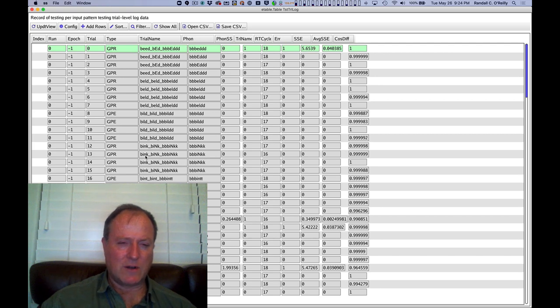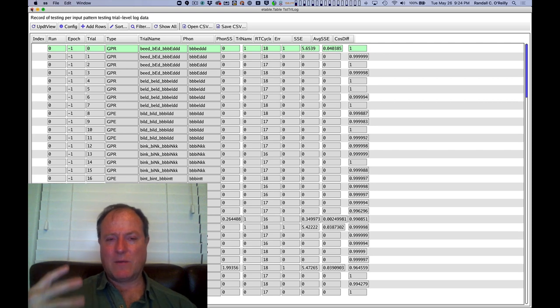And this tells you how the network responded for each of the different locations, for each of the different non-words. In general, it does a pretty good job of pronouncing these non-words, indicating that the knowledge that it's encoded is actually systematic, regular, kind of rule-like knowledge about how to pronounce these words. And it's also able to deal with all these kind of complexities and sub-regularities that are present in the English language.